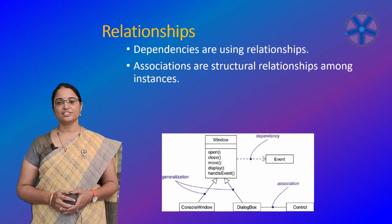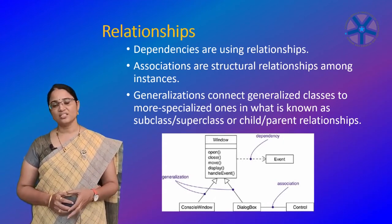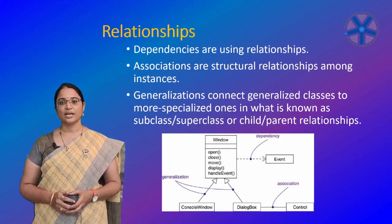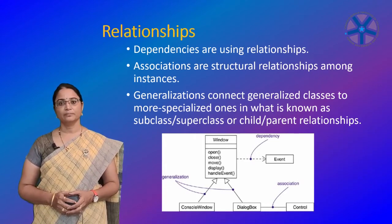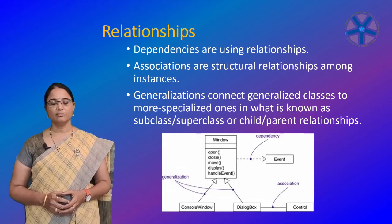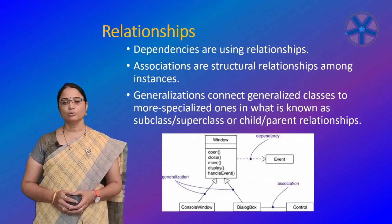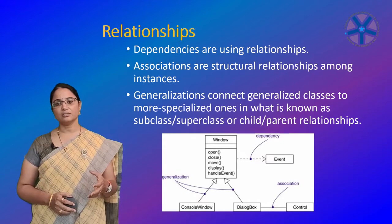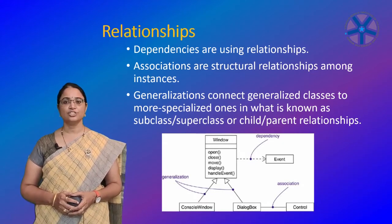Generalizations connect generalized classes to more specialized ones, in what is known as subclass-superclass or child-parent relationships. For example, a picture window is a kind of window with very large fixed panes. In this case, window is the generalized parent class, and picture window and patio window are the child classes. To represent these types of relationships, we use generalization.